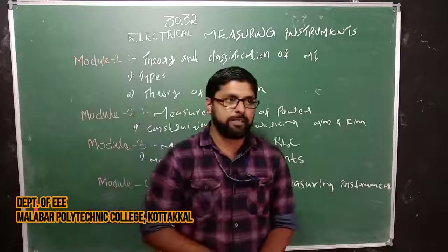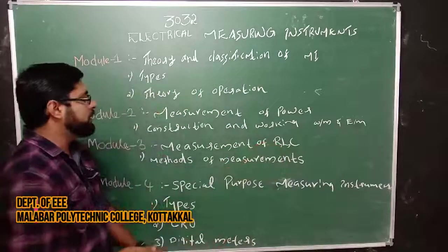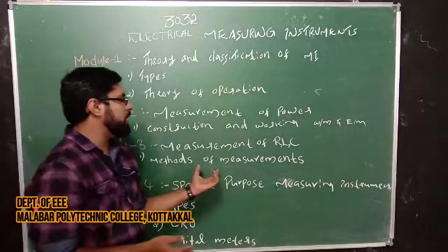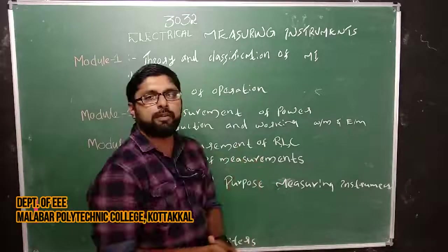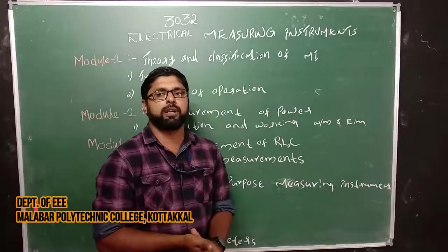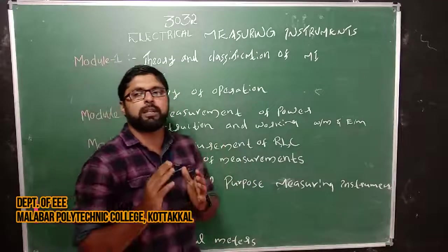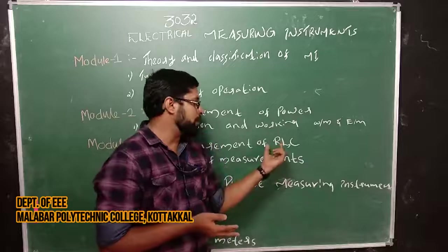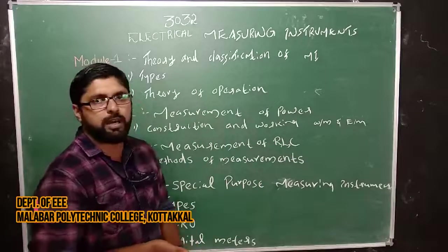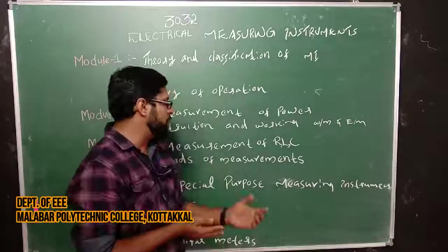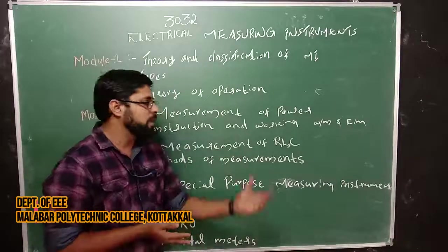The third module covers the measurement of RLC — Resistance, Inductance, and Capacitance. If a circuit is composed of resistance, we can use various methods and types of measuring instruments for resistance or capacitance. We will discuss these in the third module.